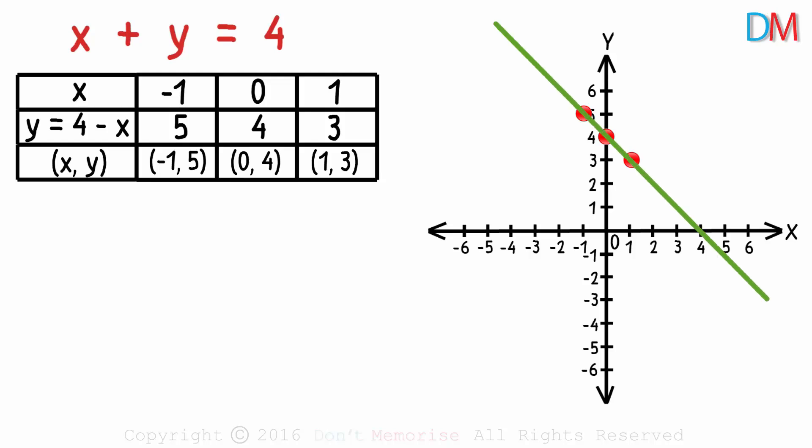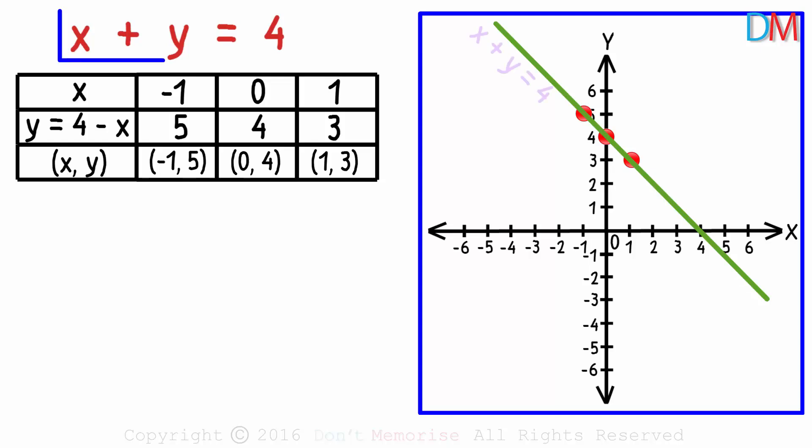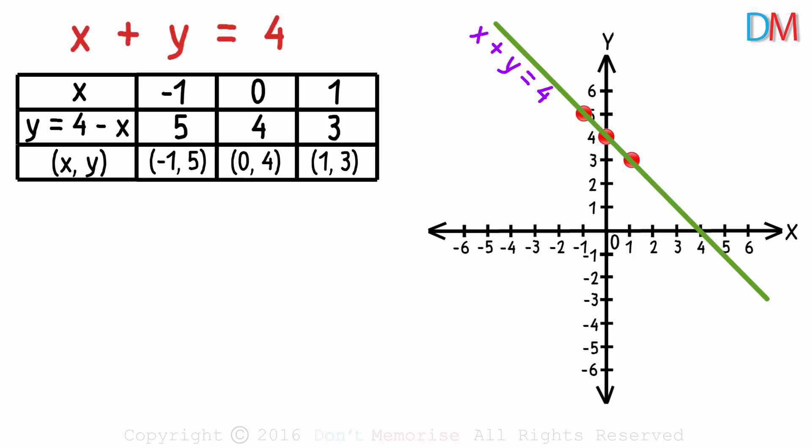On joining these points, we get a straight line. This is the graph of the linear equation x plus y equals 4. It looks like a simple graph, but there are many things we can infer from it. First, the graph is a straight line.